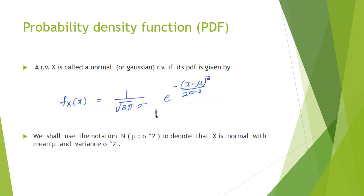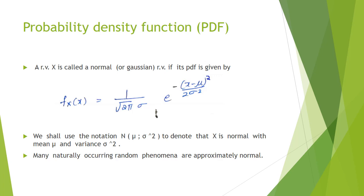In problems, the mean and variance will be given. Normal distribution is represented as N(mu, sigma²). Most naturally occurring phenomena cluster near the mean and decrease as you move away, so they can be approximated by the normal distribution. When mean is zero and variance is one, written as N(0, 1), it is called the standard normal distribution.